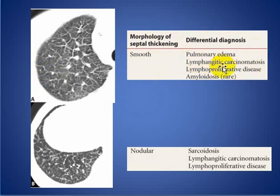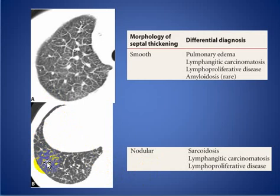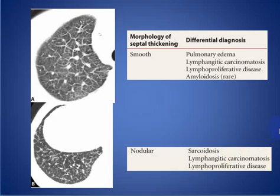If the thickening is nodular — as you see here, with nodularity and irregularity of the interlobular septum and some central pulmonary lobule involvement — the differential diagnosis includes sarcoidosis and lymphangitis carcinomatosa. Keep these in mind, as it is very important to differentiate between both conditions.